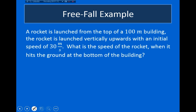Let's look at a couple of examples. The first example says a rocket is launched from the top of a 100-meter building, launched vertically upwards with an initial speed of 30 meters per second. What is the speed of the rocket when it hits the ground? The first thing we want to do is figure out what information was given and what we're trying to solve. My initial speed was plus 30 meters per second, and since the object is in free fall, my acceleration is minus 9.8 meters per second squared.